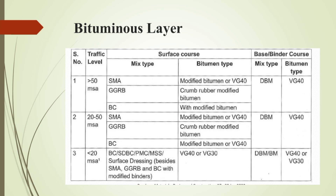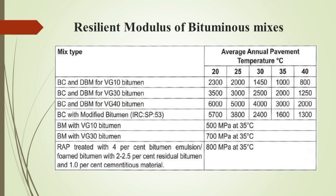Lastly, for the bituminous layer, the table given is used for the selection of mix type — whether stone matrix asphalt, gap-graded rubberized bitumen, or bituminous concrete for dense bituminous mix or bituminous mixes, as per IRC 37:2018. These are the indicative values of resilient modulus for bituminous mixes with respect to the type of mix, rate of bitumen, and pavement temperature. For analysis and design, the resilient modulus measured at 35°C as per ASTM D4123 can be adopted. Generally, if VG40 grade bitumen is used, the resilient modulus can be taken as 3000 MPa.